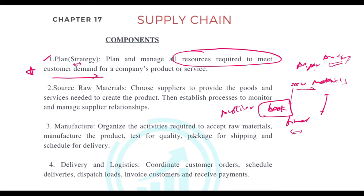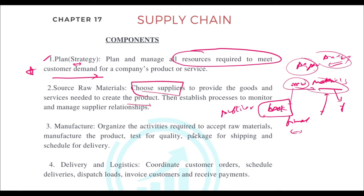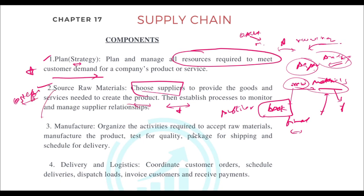The next component is Source — who will be supplying the raw materials to you. You choose suppliers to provide the goods and services needed to create the product. You then establish a process to monitor and manage those supplier relationships. Whoever is supplying raw materials, you need a good relationship with them and a way to track whether the materials are arriving in a cost-effective manner.